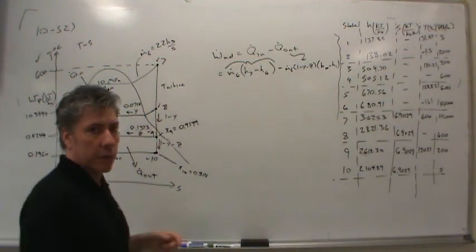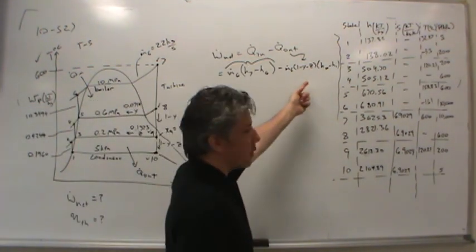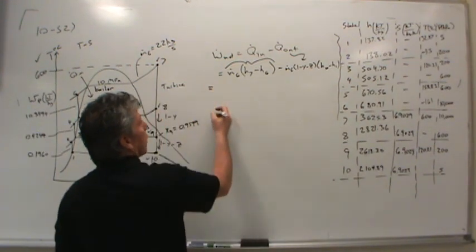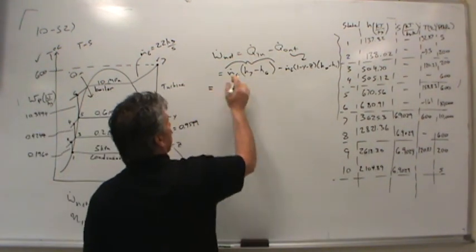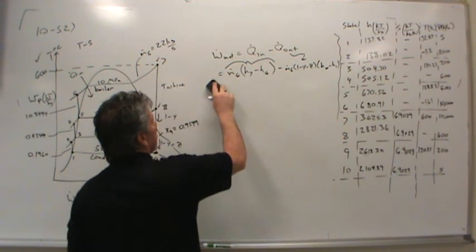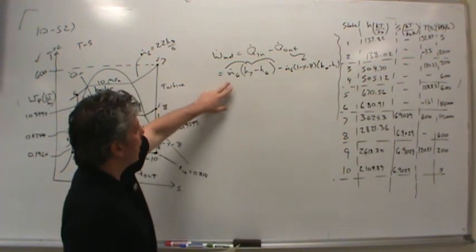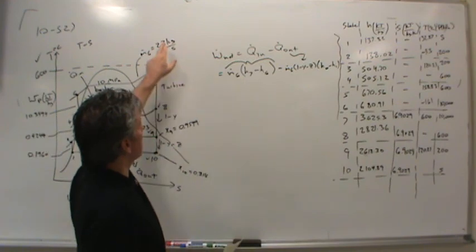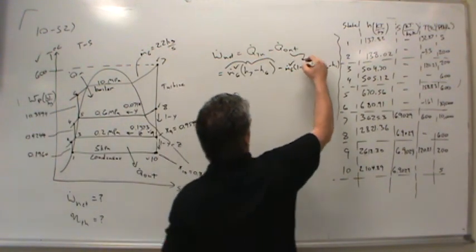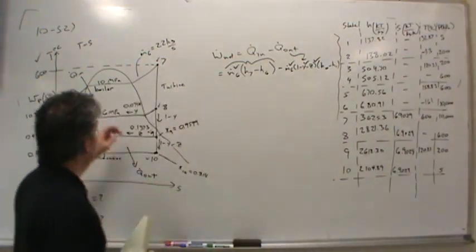This is a smaller, more compact equation than trying to deal with all of the different mass flows of the turbine and pumps. I would challenge you to try it that way too — it's good practice and you should come up with the same number. Factoring out m-dot-6, we have 22 kilograms per second. We know y is 0.0714 and z is 0.1373, so you can now plug in all the values.